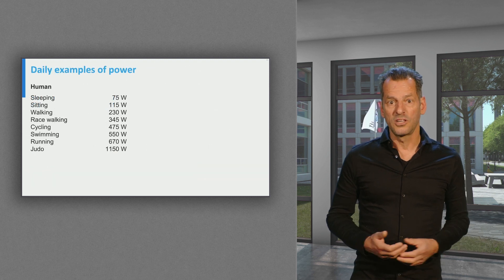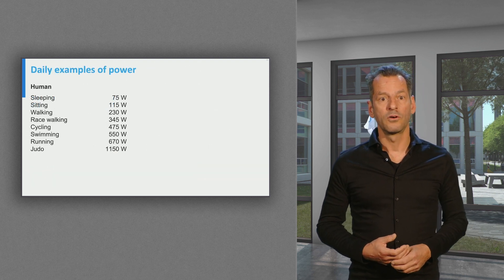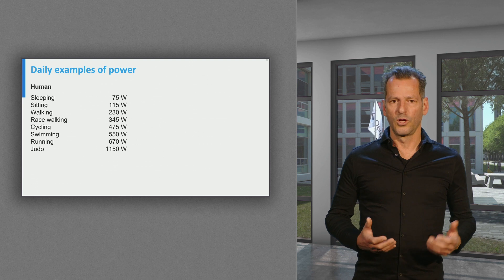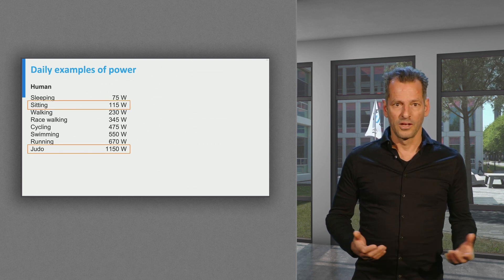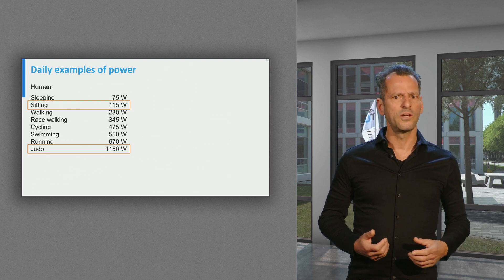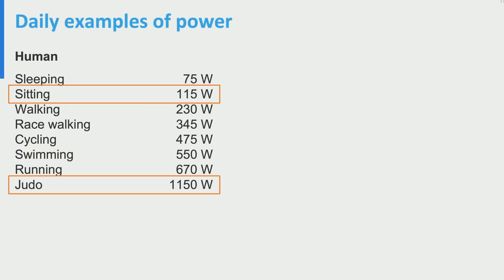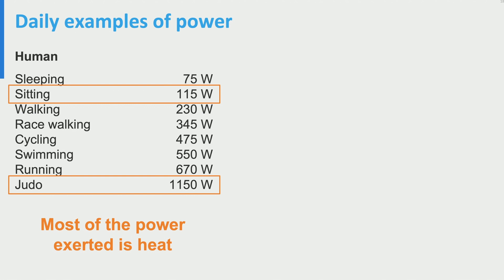Here you see a table with typical values for power of human activities. We all use energy, even when asleep. Just sitting behind your screen, you already use a little over 100 watts. As you can see, judo is physically and energetically one of the most powerful sports — ten times more powerful than sitting. Not all of this power, however, is put into force and motion.